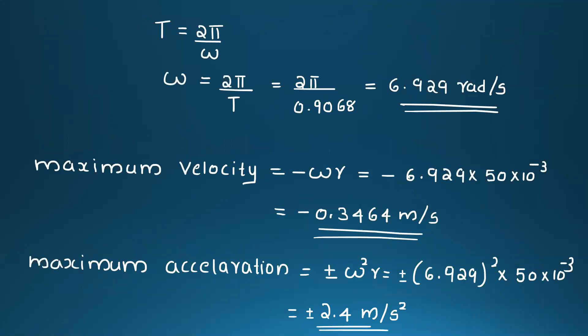Angular velocity ω equals 2π divided by T equals 2π divided by 0.9068 equals 6.929 radian per second. Maximum velocity equals minus ω times R equals minus 6.929 times 15 × 10⁻³ equals minus 0.3464 meter per second. Maximum acceleration equals plus or minus ω² times R equals plus or minus 6.929² times 15 × 10⁻³ equals plus or minus 2.4 meter per second squared.